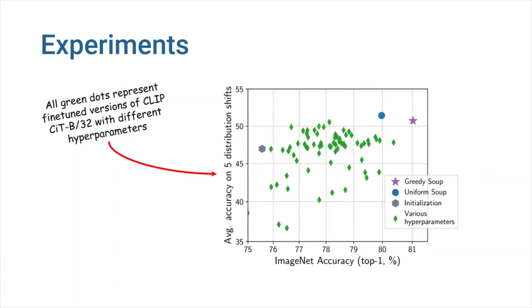The authors conducted a large random parameter search for fine-tuning a CLIP model on ImageNet. The greedy soup outperforms every single fine-tuned model in terms of accuracy. Uniform soup is also good. It achieves highest accuracy on five distribution shifts.